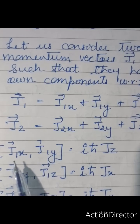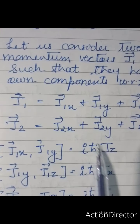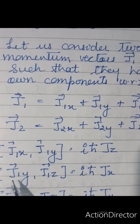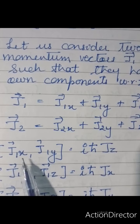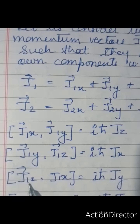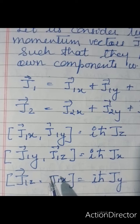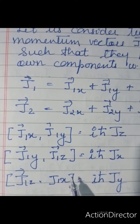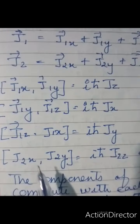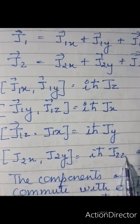Now let us see the commutation relation: [J1x, J1y] will give iħJ1z — this we have already derived. Similarly, [J1y, J1z] will give iħJ1x. So if it is xy, you write z; if it is yz, you write x; if it is zx, you write y. Similarly for J2: [J2x, J2y] gives iħJ2z, and so on.